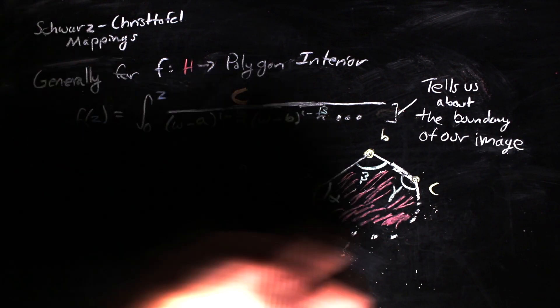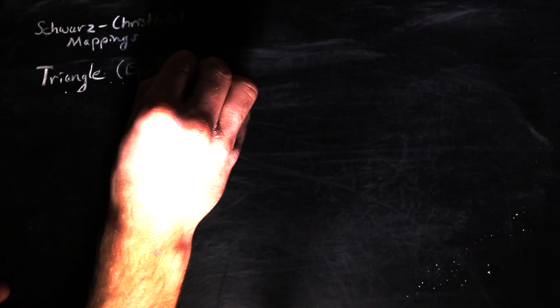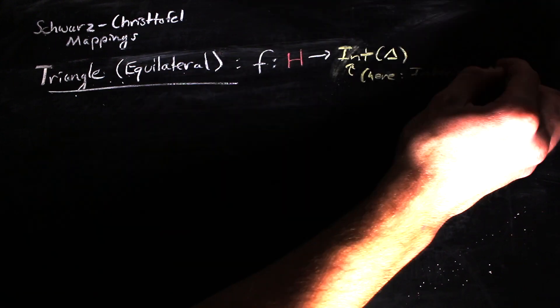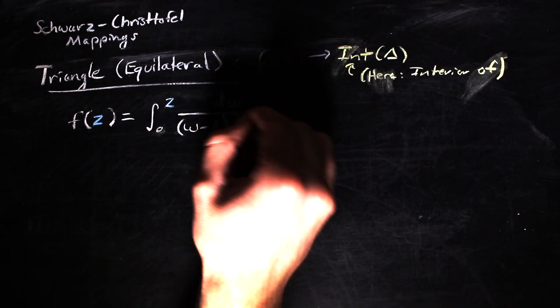So for example, if we wanted an equilateral triangle, we could have the mapping from the upper half plane to the complex numbers given by this expression.